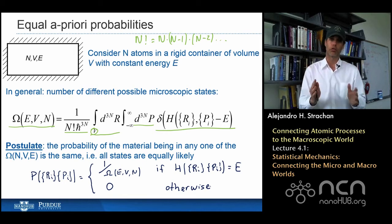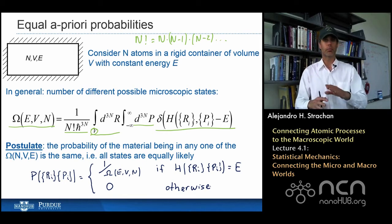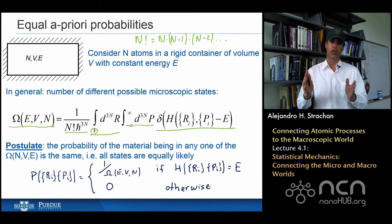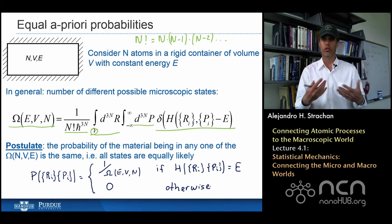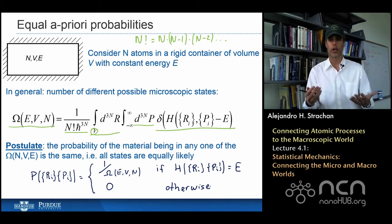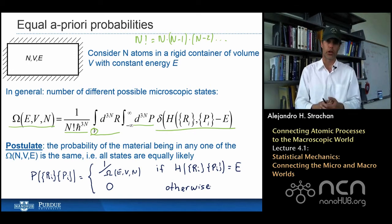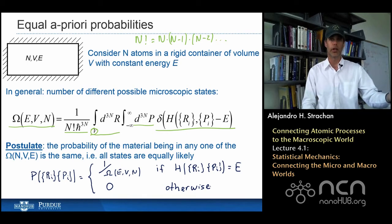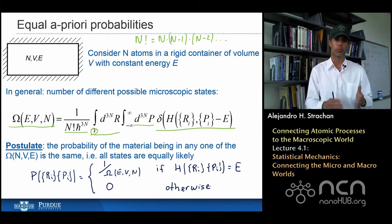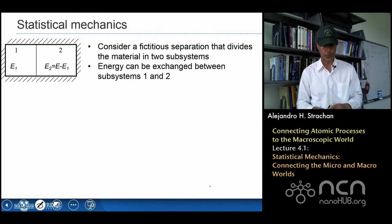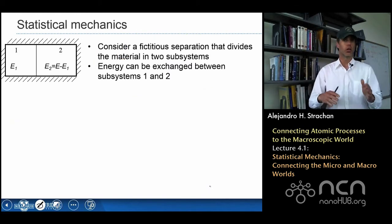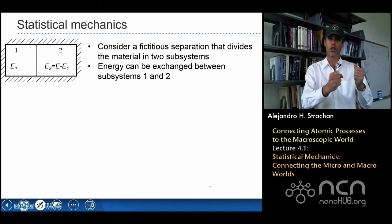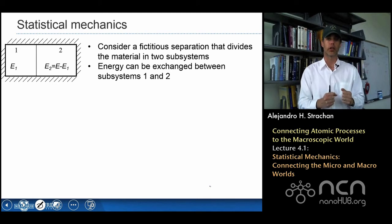Everything else will be derived, and we're going to see that the predictions we make are consistent with thermodynamics and with our experience — we justify this postulate a posteriori based on the predictions we're going to make. In principle I can now relate what the probability of a given configuration is. Let's see what implications that has.